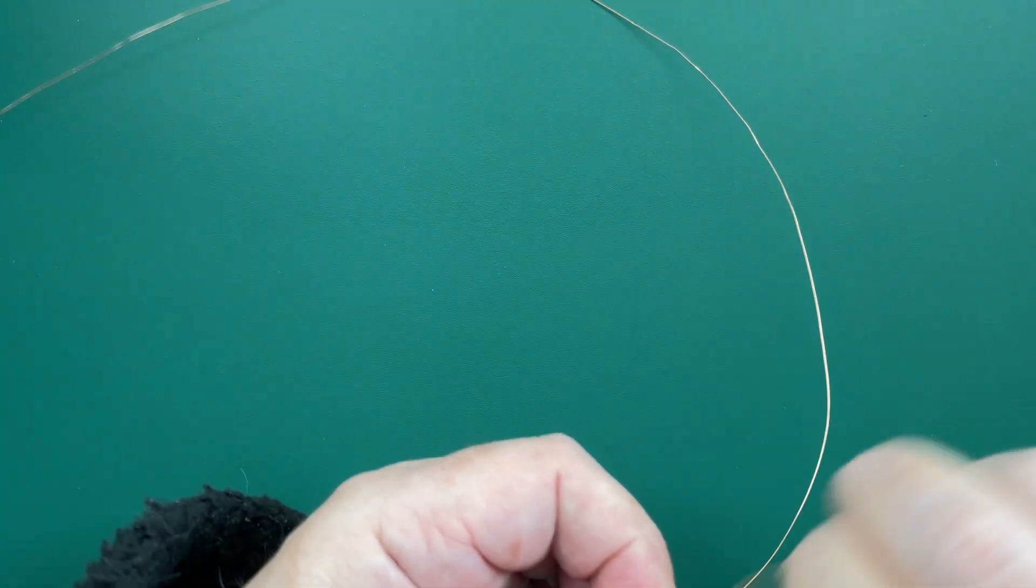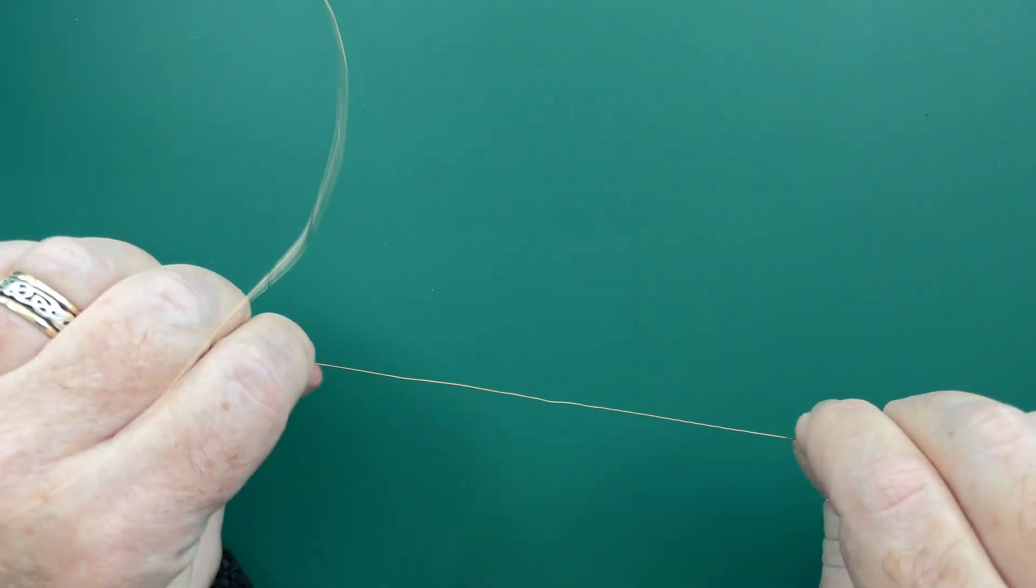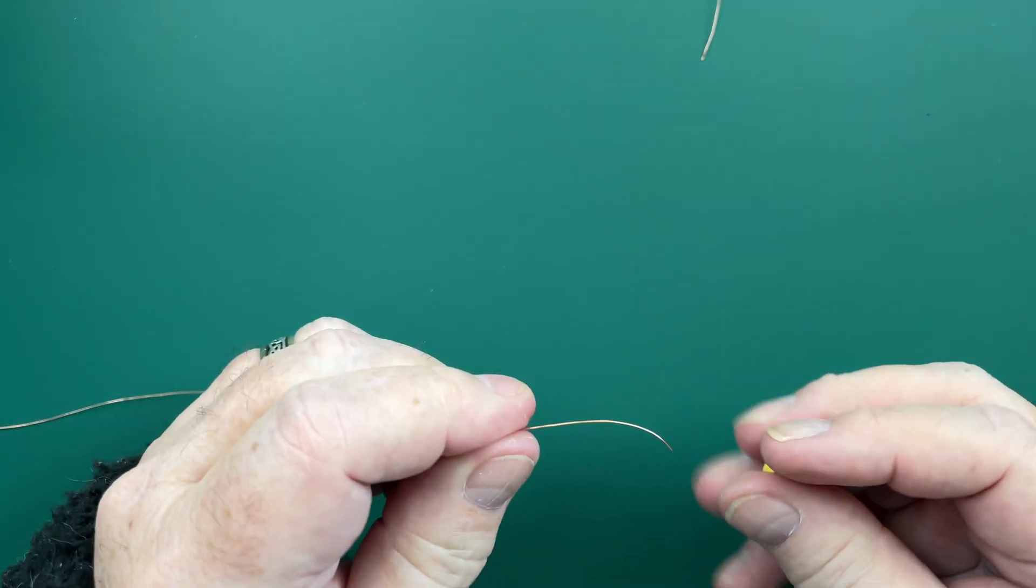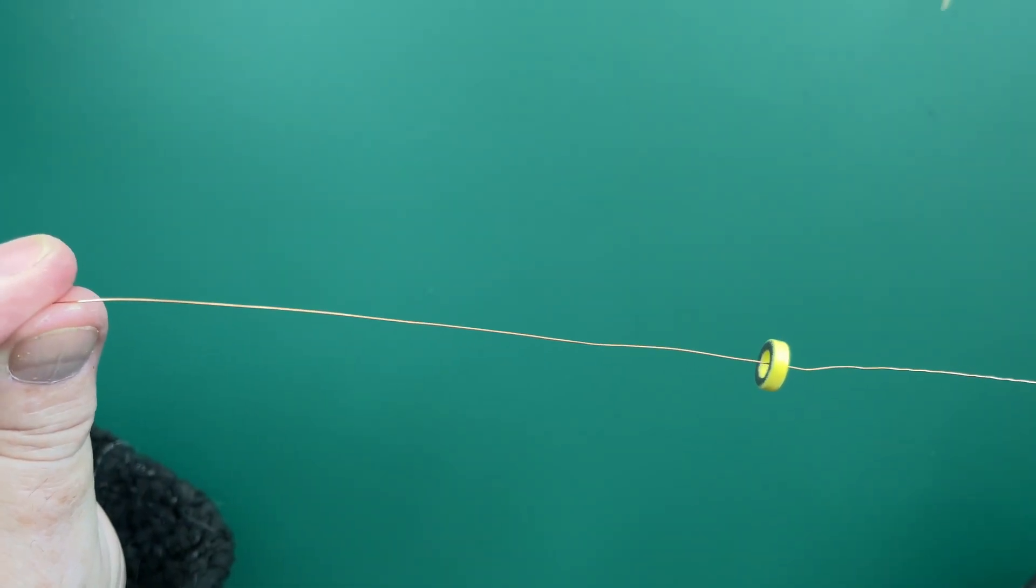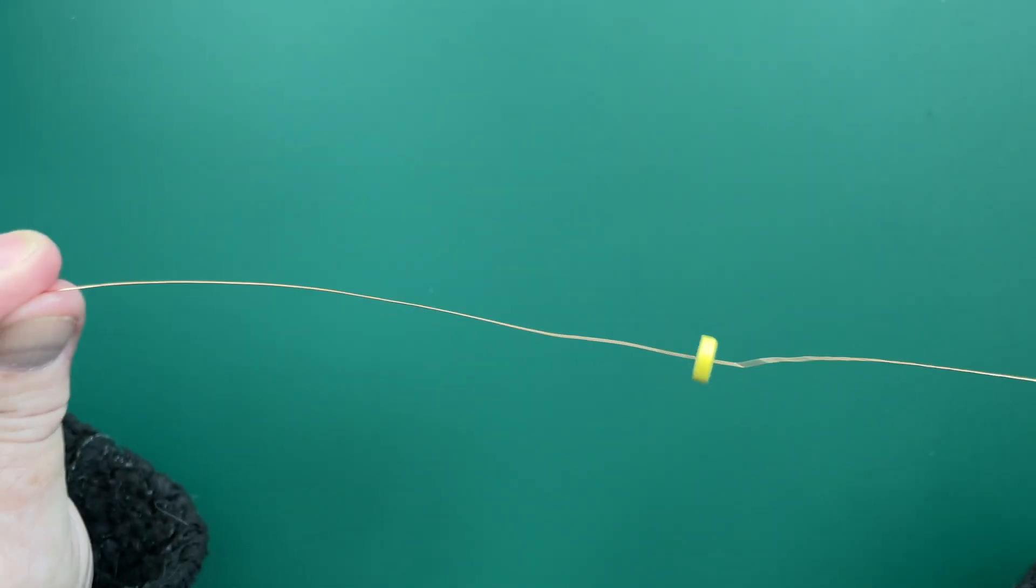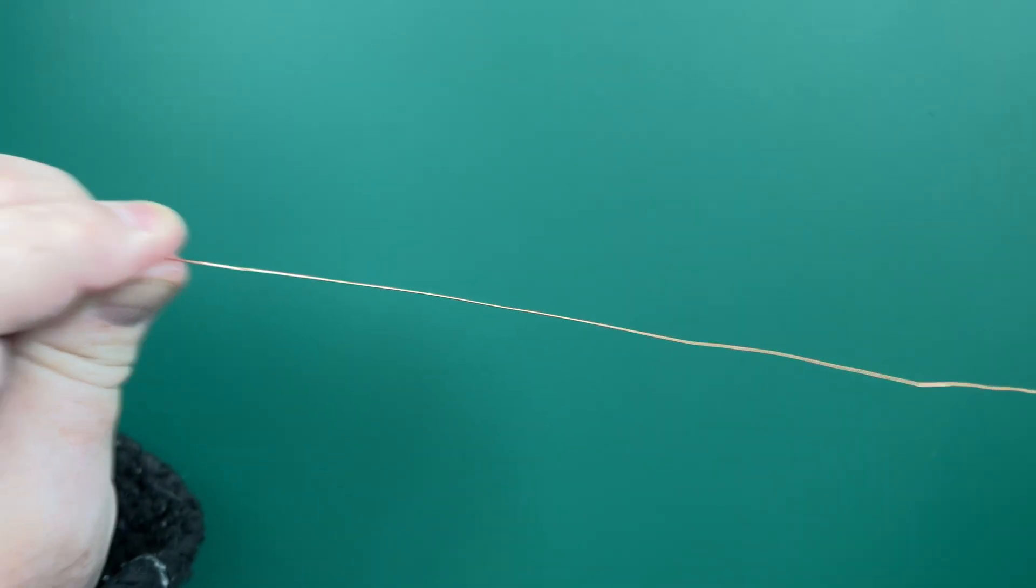Well the simple answer is every time the wire passes through the toroid, it's a winding. So one winding is simply that. It's just the wire through the toroid, and that is one winding.